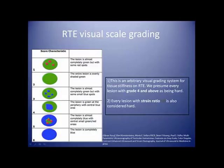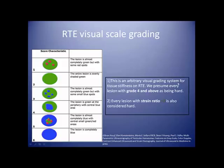RTE visual scale grading: scores from 1 to 6. Score 1 is green with red areas; almost completely green with some red spots — a soft lesion. A green lesion is also soft, then we start to see some blue spots, a more confluent blue area, a predominantly blue lesion with some soft appearances, and then a completely blue lesion. This is an arbitrary visual grading system for tissue stiffness on real-time elastography.